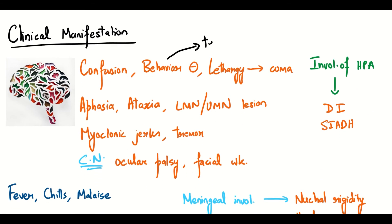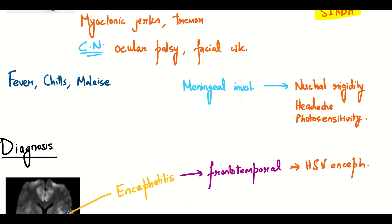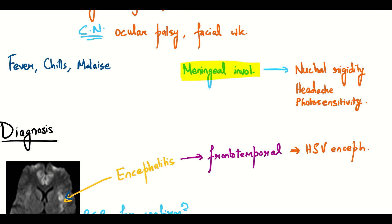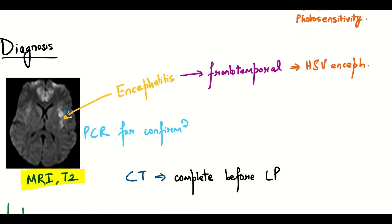Behavior abnormalities are because of temporal lobe involvement and aphasia and ataxia are also present. SIADH is a complication because of the HPE involvement. MRI T2 is more sensitive than CT. PCR is for confirmation.